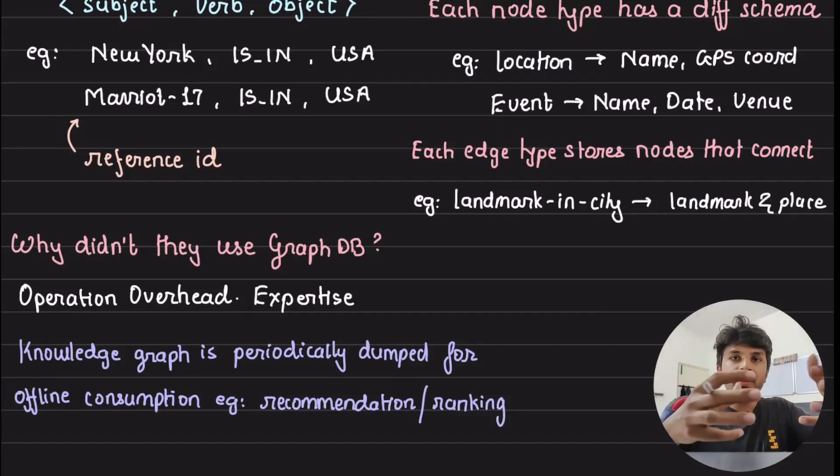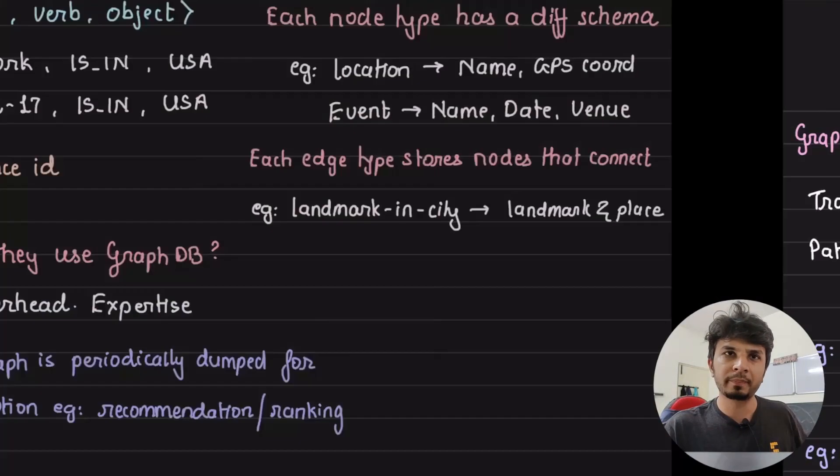So that's why, periodically, the data from the knowledge graph, this particular database, is dumped into a format that other services can consume from, and they typically do it for offline ranking processing, recommendations, and whatnot, right?